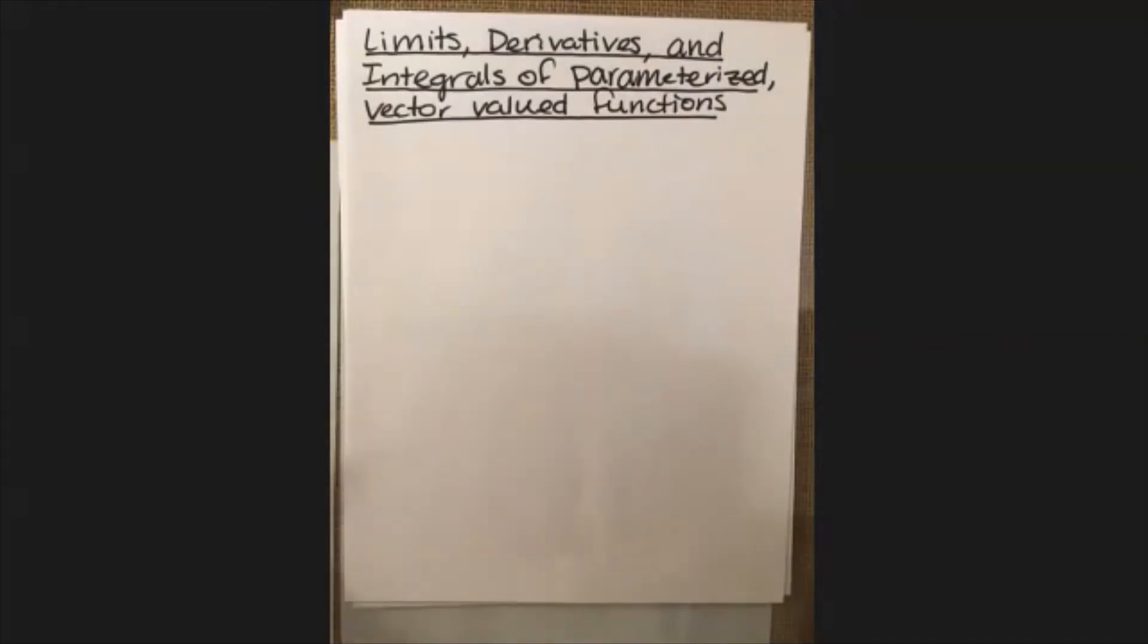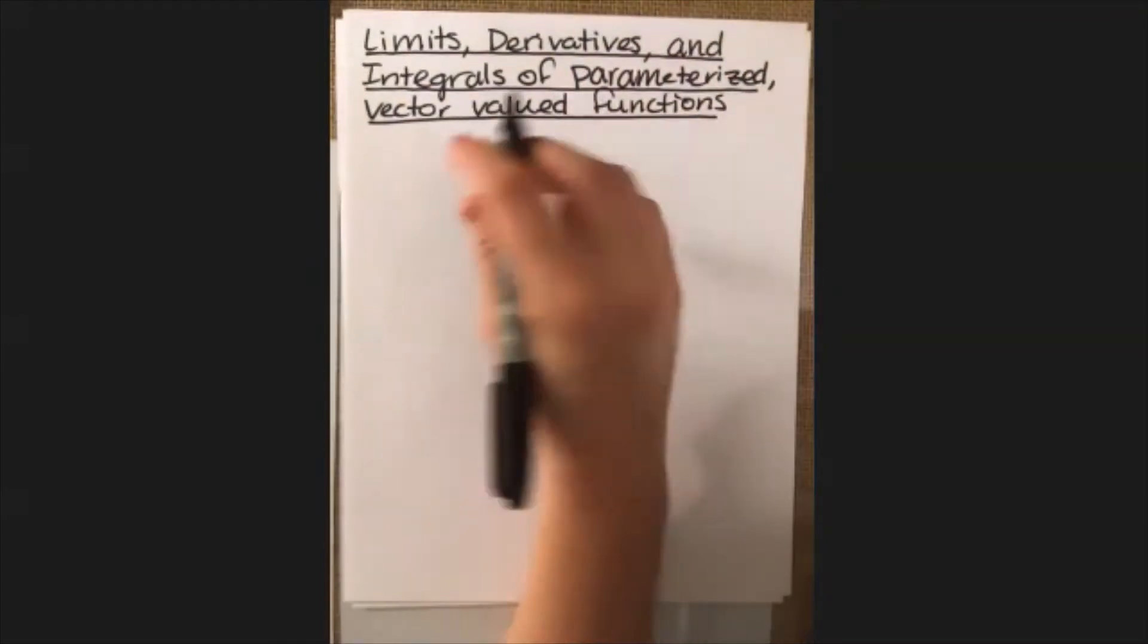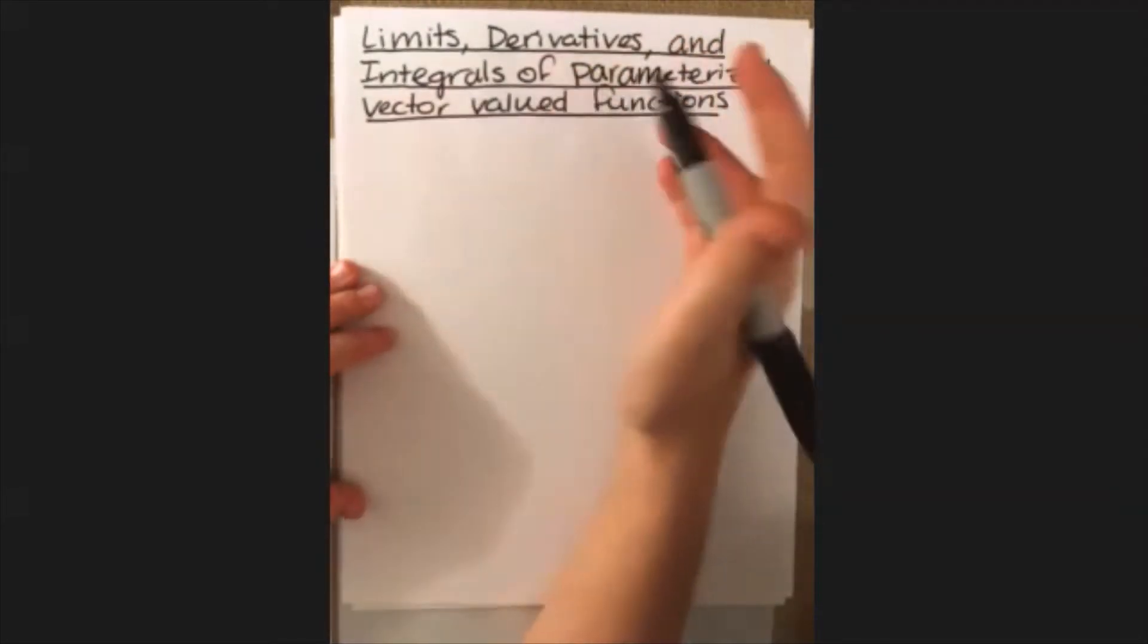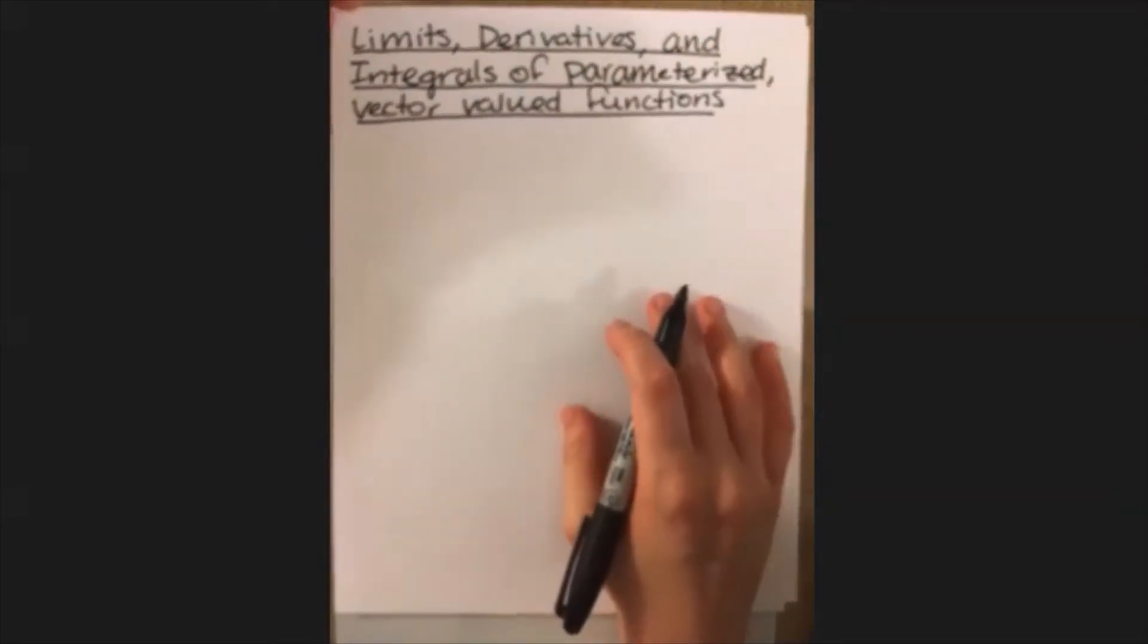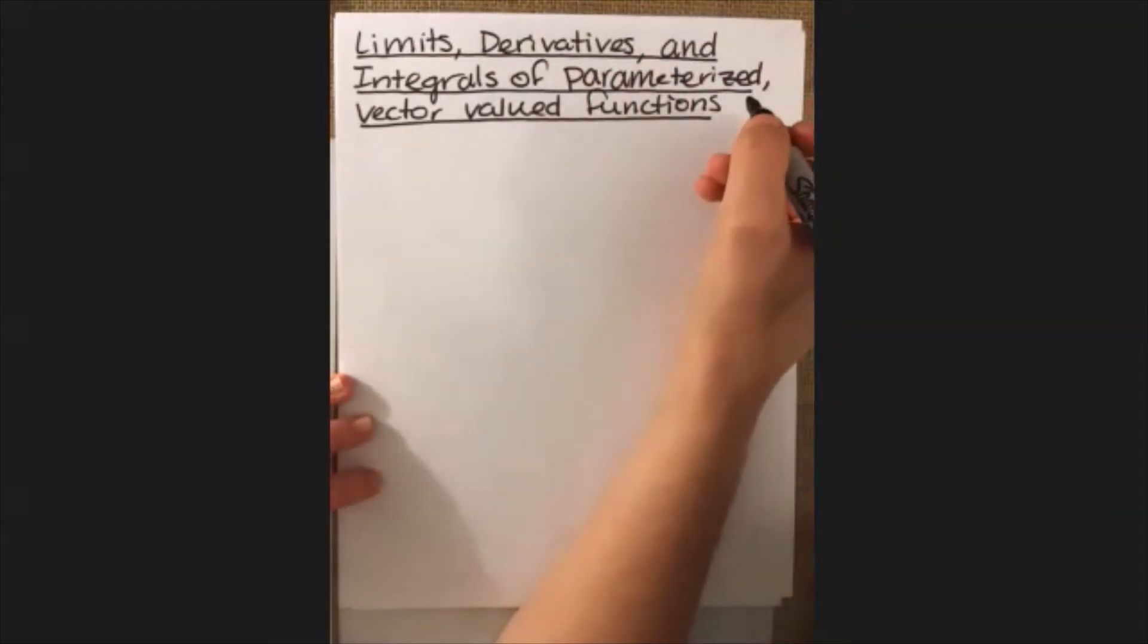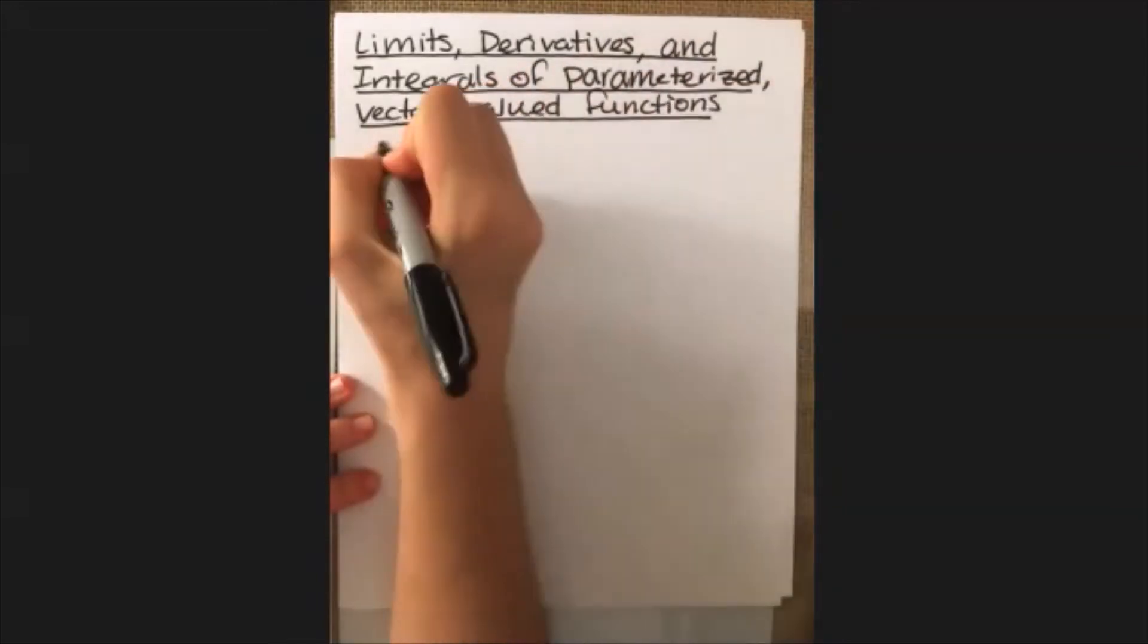Welcome back. In this video, we cover examples of taking limits, derivatives, and integrals of the parametrized vector-valued functions that we discussed in the last video. Good news for working with limits, derivatives, and integrals of these types of functions is that they work pretty much exactly the way that you would want them to. We apply the same types of rules that we did in standard scalar-valued functions, and the only added step is that we just have to apply it to each component.